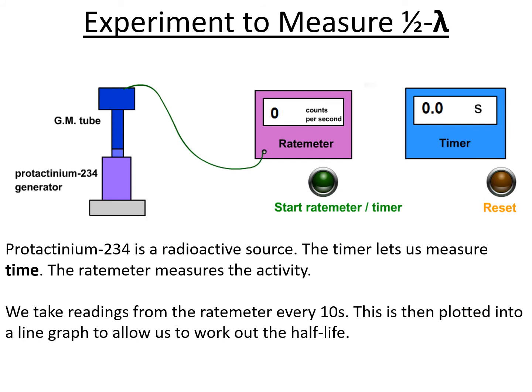For the experiment we're going to use a radioactive source called protactinium-234. We've got a GM tube connected to a rate meter that counts the activity for us, and then we've got the timer so we know what time points to take a reading for.